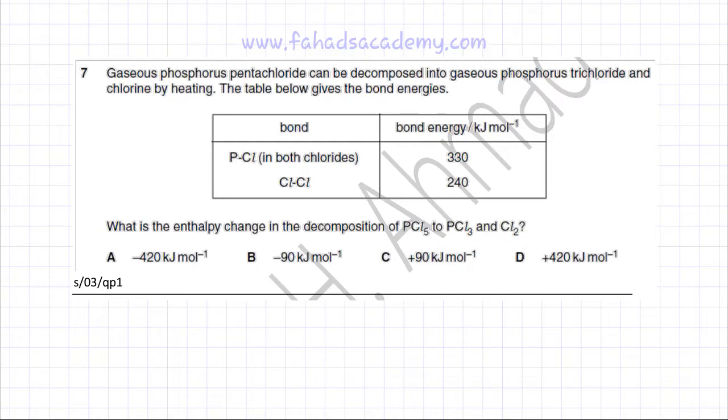The following chemical energetics question deals with bond energies. The question states that gaseous phosphorous pentachloride PCl5, pentachloride means there are 5 chlorines, can be decomposed into gaseous phosphorous trichloride PCl3 and chlorine.